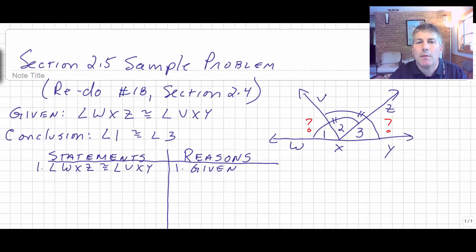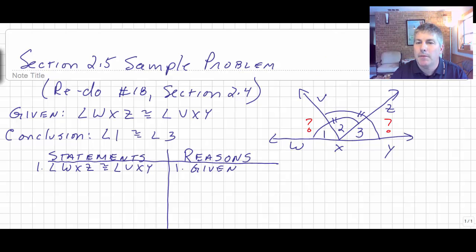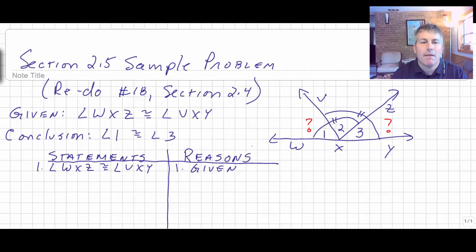Let's take a look at a sample problem that involves addition or subtraction with angles. This will model my expectations. We're going to redo a problem you may have done for classwork — we worked with supplements, but addition or subtraction works a little bit better. We're given that angle WXZ is congruent to angle VXY, and we want to prove that angle one is congruent to angle three. In this problem, we are going from something big to something small, so you should be thinking subtraction.